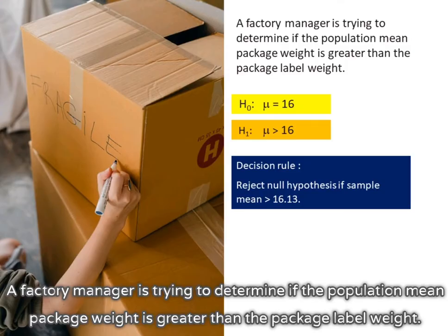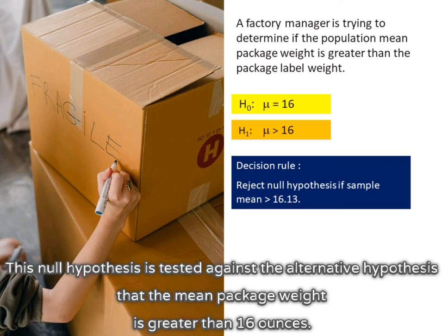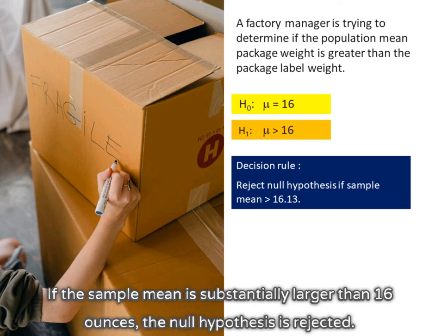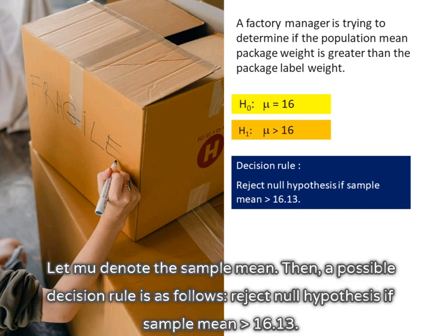A factory manager is trying to determine if the population mean package weight is greater than the package label weight. The null hypothesis is that the population mean package weight is equal to the label weight of 16 ounces. This null hypothesis is tested against the alternative hypothesis that the mean package weight is greater than 16 ounces. To test the hypothesis, we obtain an independent random sample of cereal packages and compute the sample mean. If the sample mean is substantially larger than 16 ounces, the null hypothesis is rejected; otherwise, we will not reject the null hypothesis. A possible decision rule is: reject the null hypothesis if the sample mean is greater than 16.13.